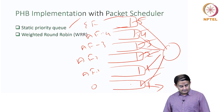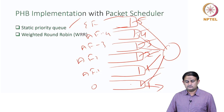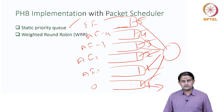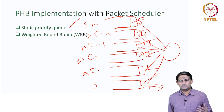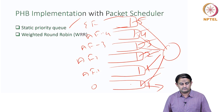The way a particular packet is placed into a queue is defined by the code point set inside the packet. We will come back and look at different kinds of scheduling operations in the next class.